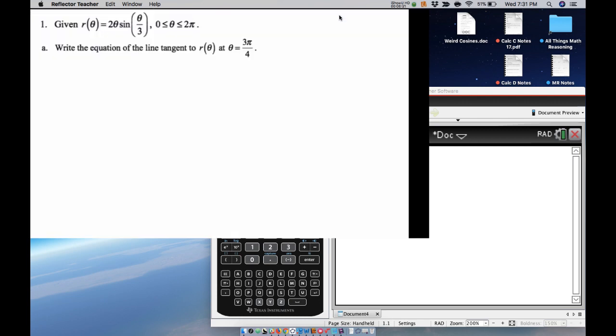The first question says, given r(θ) = 2θ sin(θ/3), where θ goes from 0 to 2π, write the equation of the line tangent to r(θ) at θ = 3π/4. So we're going to need to find x, we're going to need to find y, and we're going to need to find dy/dx. So we know what those are.